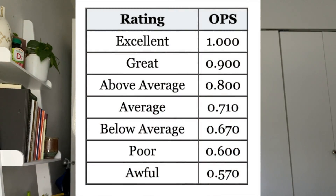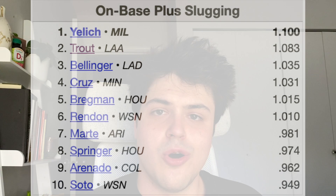I found a wonderful chart breaking down what a good OPS is. OPS is very easy to understand: anything above 1000 is elite or excellent, 900 is pretty good, 800 is above average, and 700 is average. I like to think of it as 1000 is an A, 900 is a B, 800 is a C-plus — easy to understand, just like a grade school grading system. The league leaders in OPS: Christian Yelich leads the league in 2019, followed by Trout, Bellinger, Cruz, and Bregman — the usual suspects you could imagine would be leading OPS.